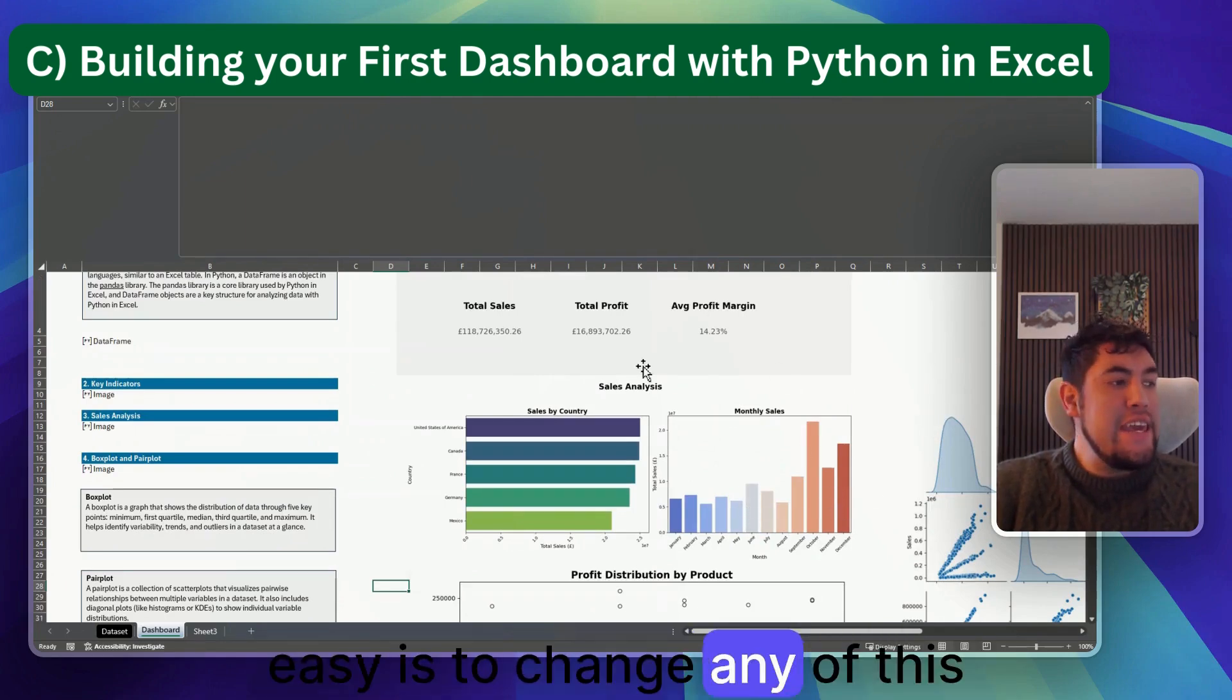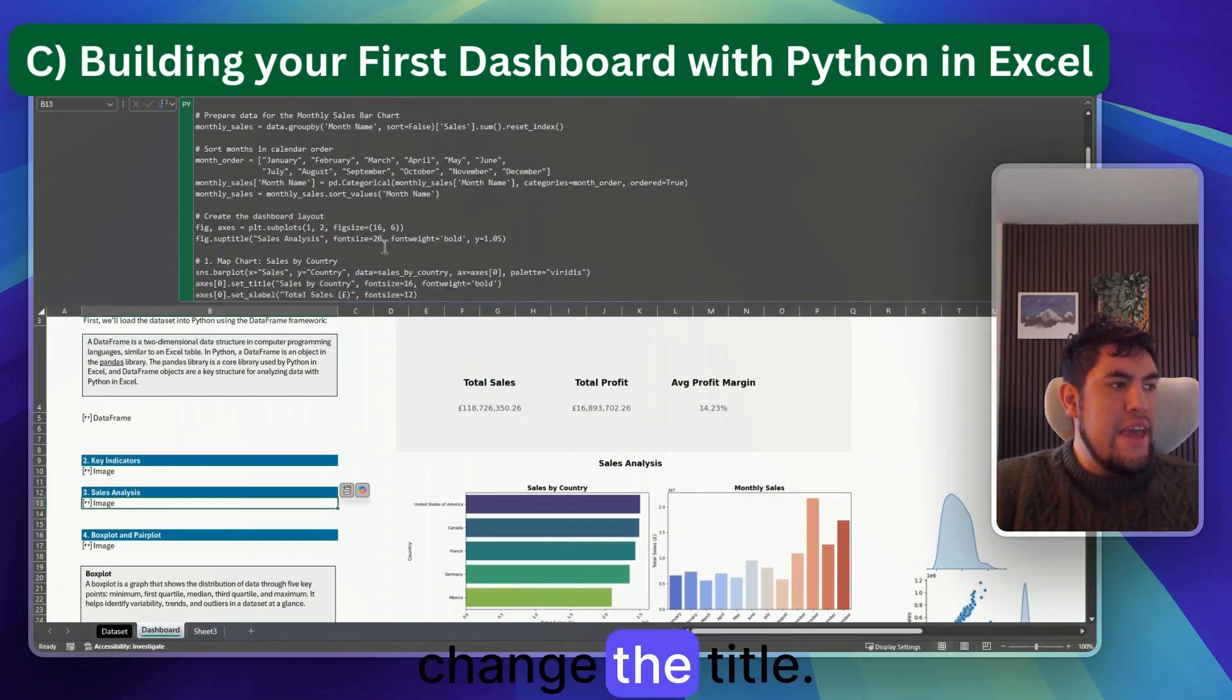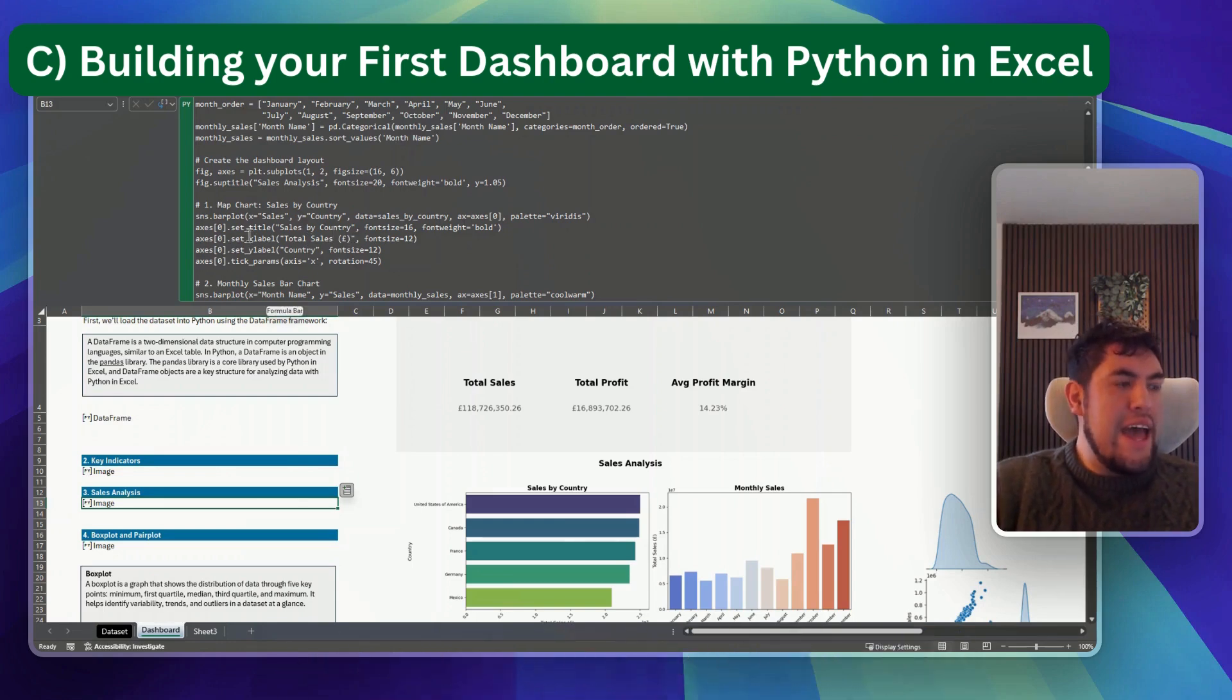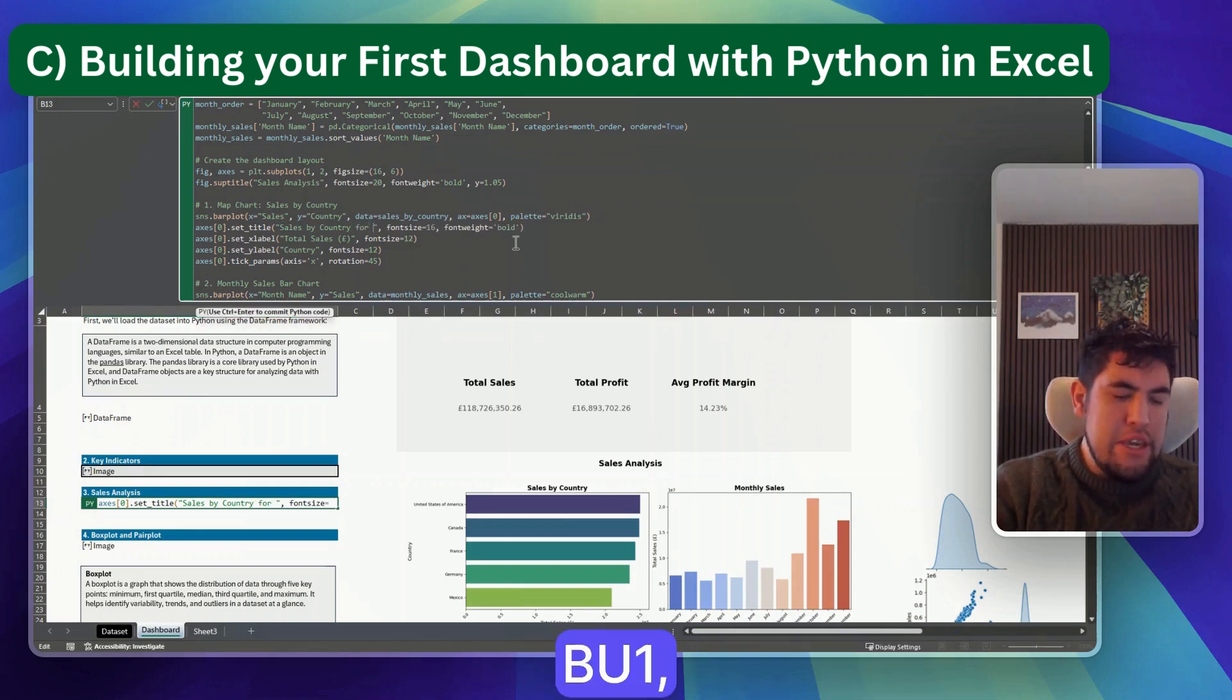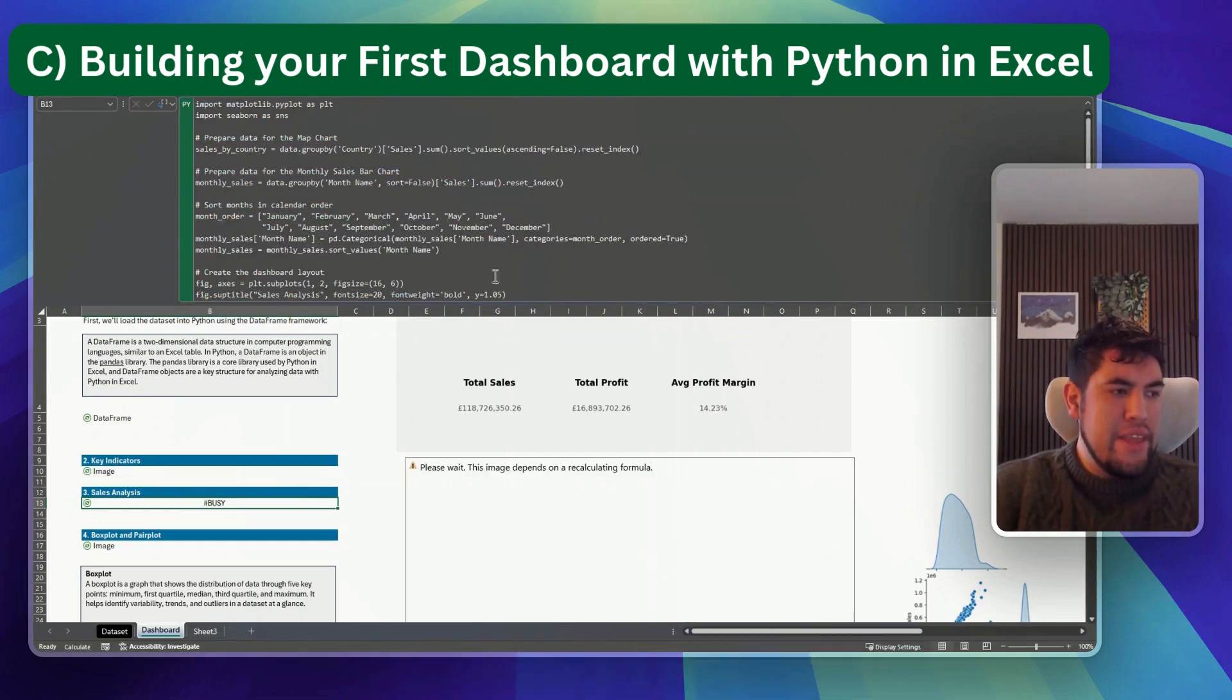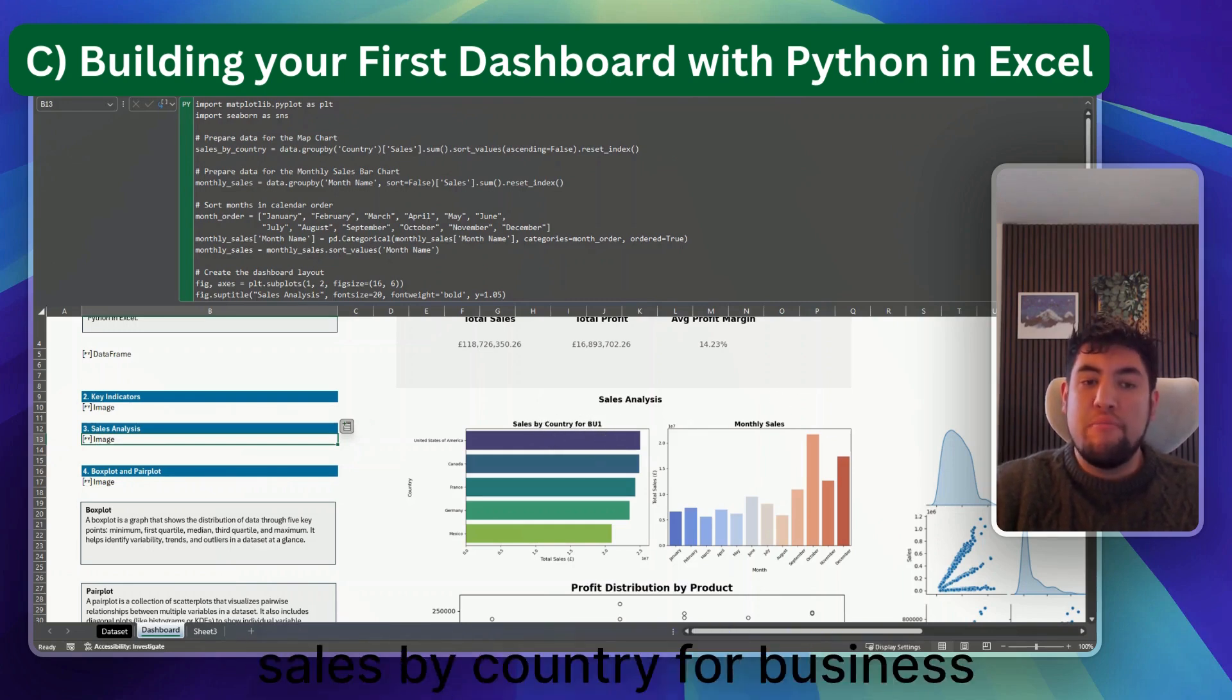Now one thing that I also want to show you is how easy it is to change any of this to customize it for your different needs. So in each one of the graphs, let's say that you want to change the title. You would go to the sales analysis cell, and in here you will see that I set the title of 'Sales by Country', but let's imagine that you want to do 'Sales by Country for BU1'. You only need to type that between the brackets and then again Control-Enter. After all of these formulas are recalculated, it will appear as the title of the graph. As you can see, 'Sales by Country for Business Unit 1'.